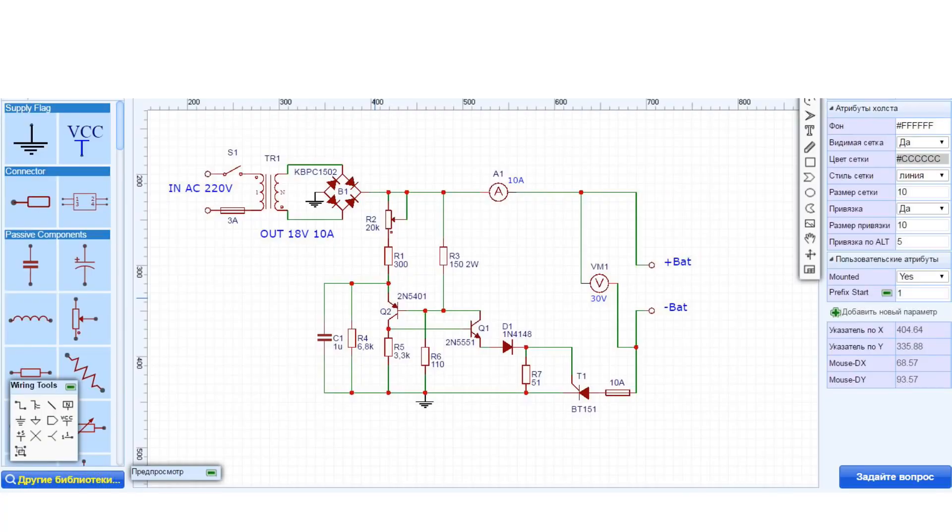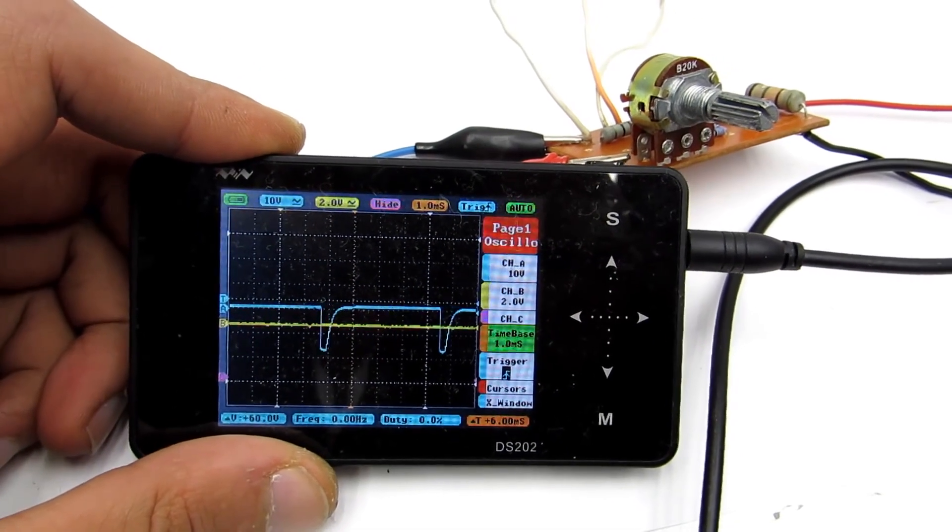So let's speak about the scheme. It differs from conventional linear circuits on the transistor Q1 and Q2. Pulse generator is assembled therefore battery charging made through current pulses. This can be seen on oscilloscope.